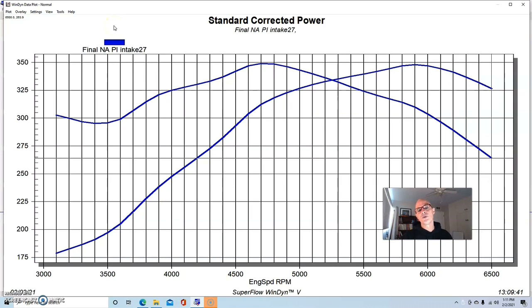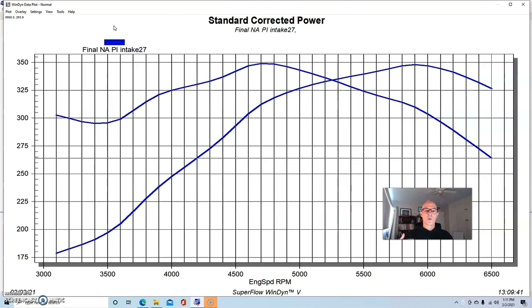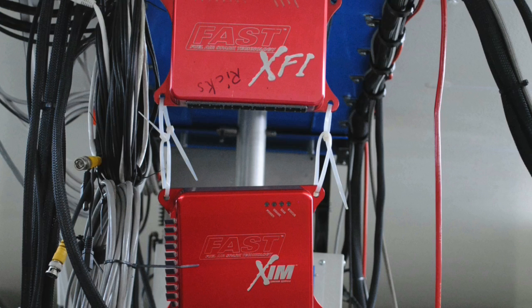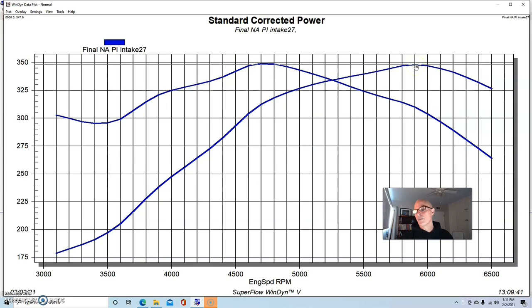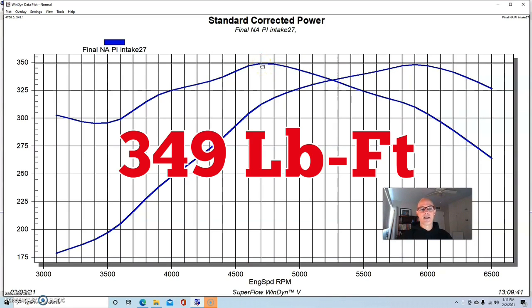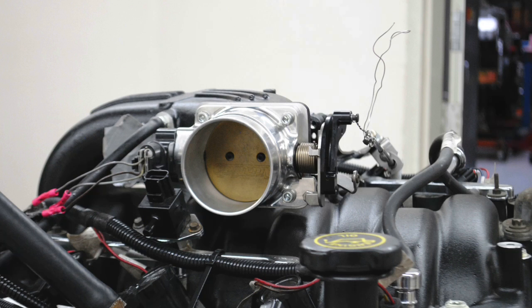For the PI heads we ran a PI intake manifold with an AccuFab throttle body. We had long tube headers and a FAST XFI management system. The thing was optimized with an electric water pump. Run with the PI intake manifold and AccuFab throttle body, this combination produced 348 horsepower and 349 foot-pounds of torque. Here's what happened after we installed the Trick Flow intake manifold.